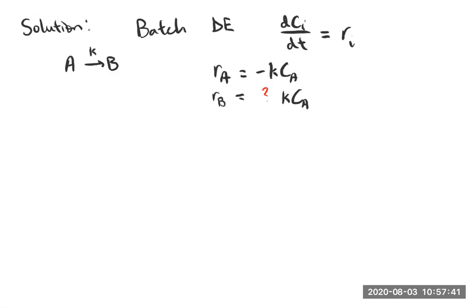Okay, so if we were then to plug in our terms for A or for B, for species A, we can say that DCA DT equals minus KCA. And if we wanted to look at this for species B, we can say that DCB DT equals KCA.